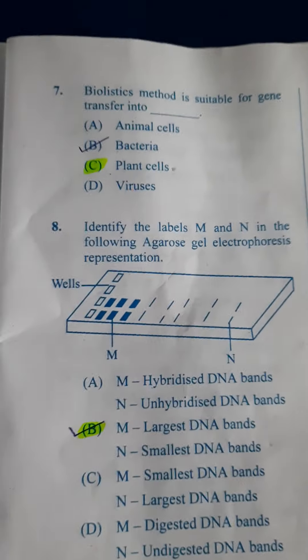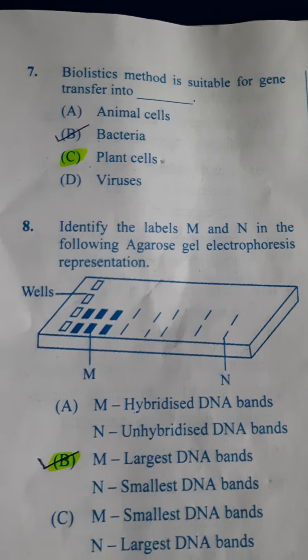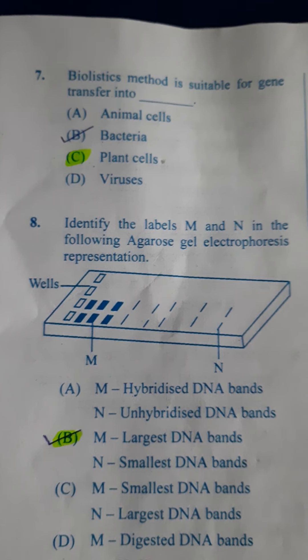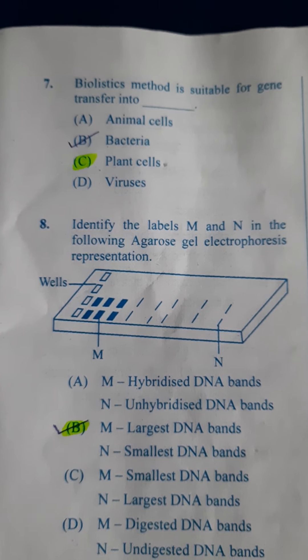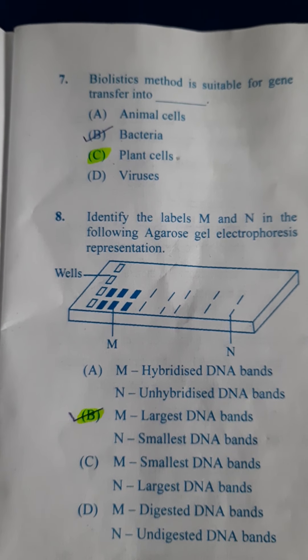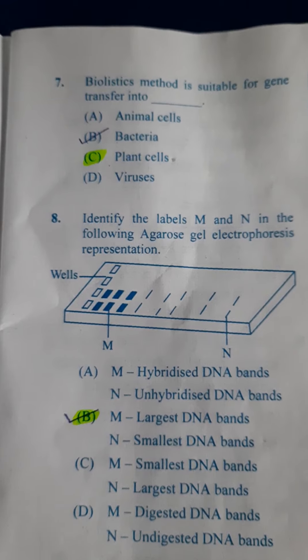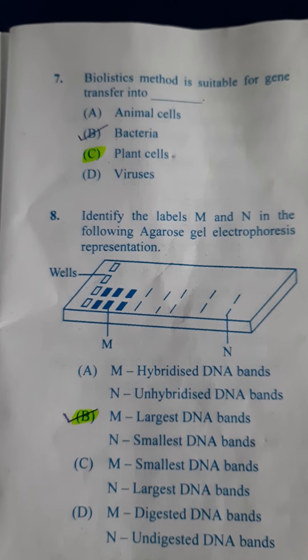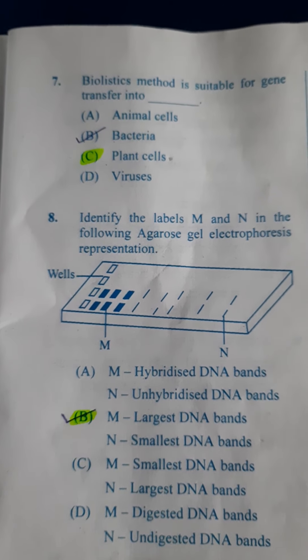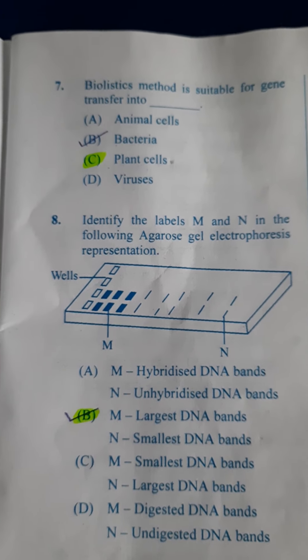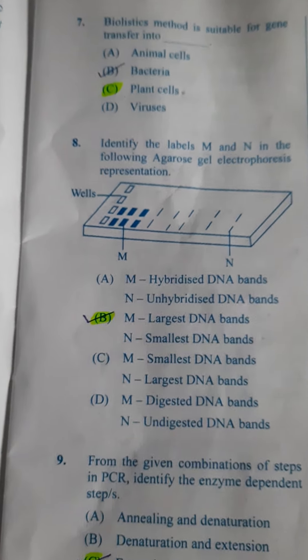Next question: Biolistic method is suitable for gene transfer into — you must have heard about the biolistic gene gun method. It is used mostly for plants. Answer is C.